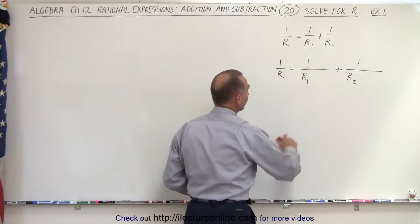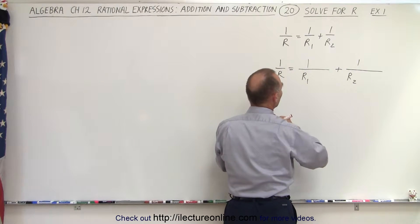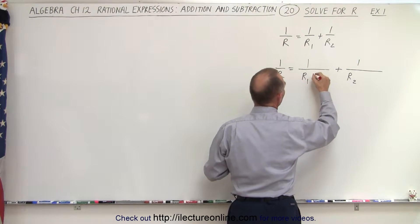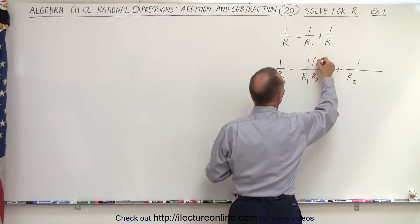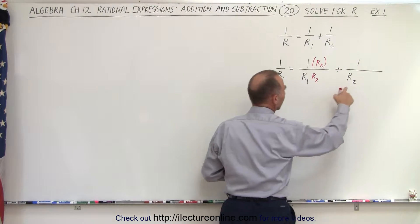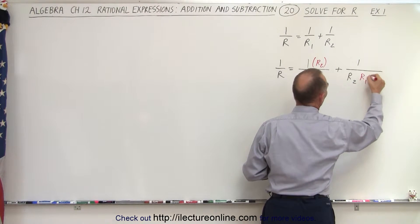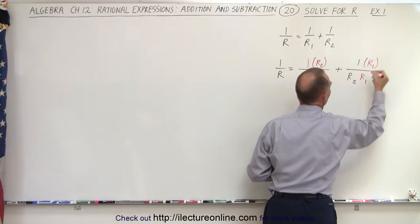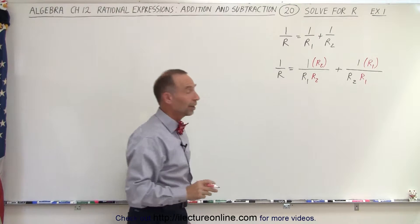So first of all, notice that we're missing an r2 here. So I'm going to multiply the left side here by r2, which means we need to multiply the numerator by r2 as well. And here we're going to multiply this by r1, which means we're going to multiply the numerator by r1 as well.